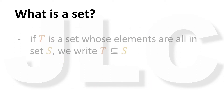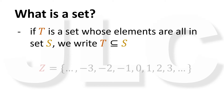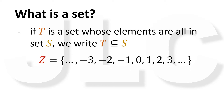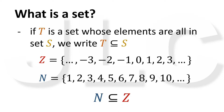If T is a set whose elements are all in set S, then we write T is a subset of S. For example, if Z is a set of all integers and N is a set of all natural numbers, then N is a subset of Z, since every natural number is also an integer.